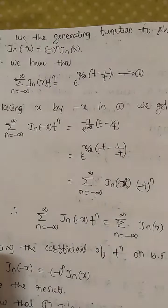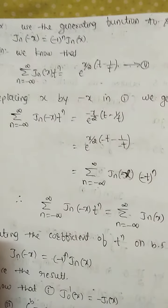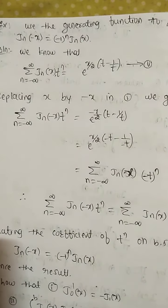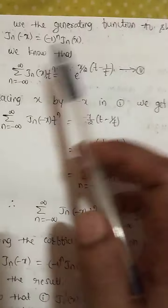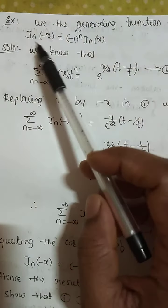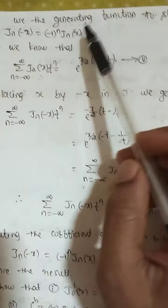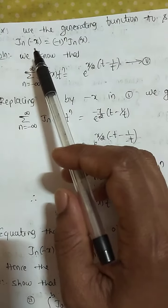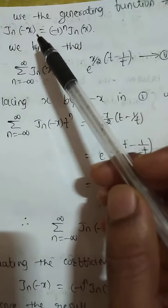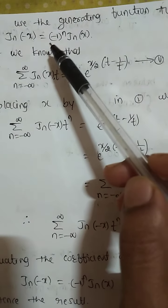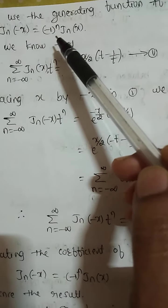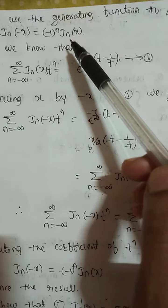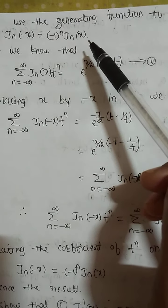Hi students, welcome back to class 15 on Bessel functions. Example: use the generating function to show that J_n of minus x equals minus 1 power n times J_n of x.